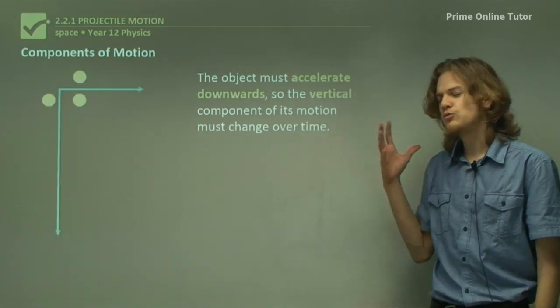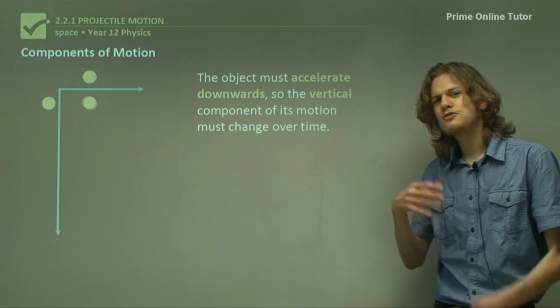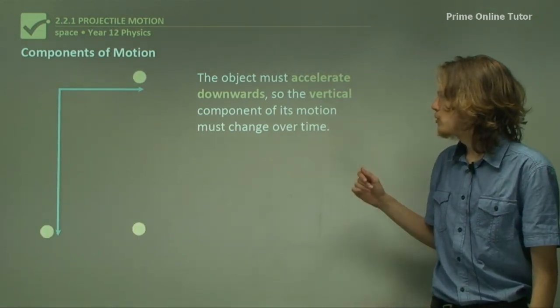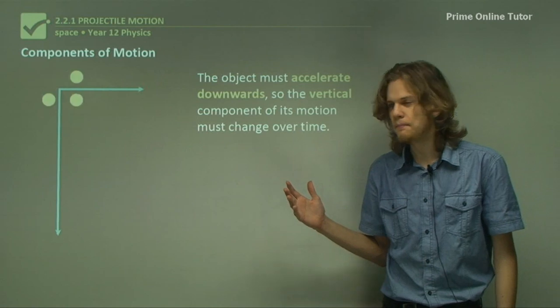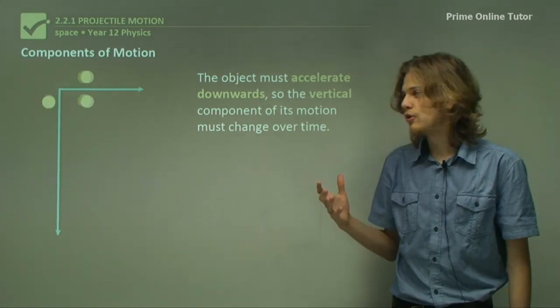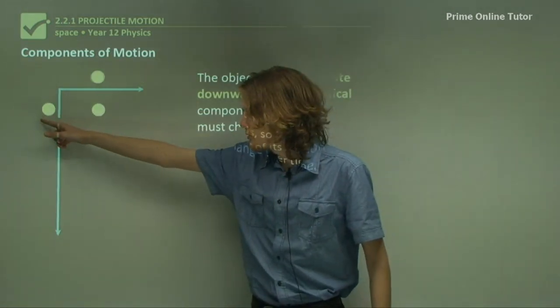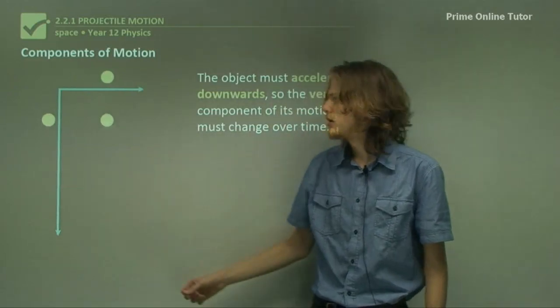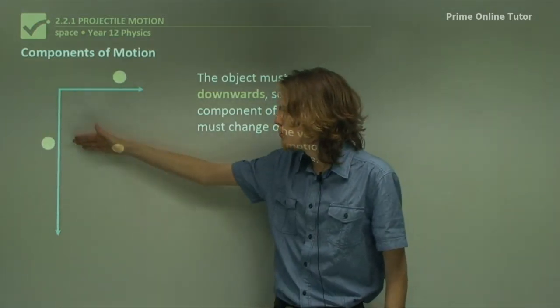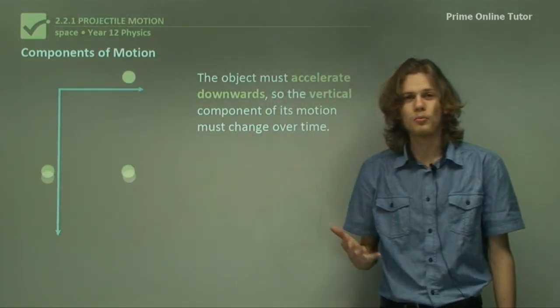The object has to accelerate downwards, that's gravitational acceleration. So the vertical component of its motion will change over time. We can see the vertical component of the motion modeled on the left side of this blue line. We can see that it starts off fairly slow, but it speeds up as it gets down to the bottom of the image.